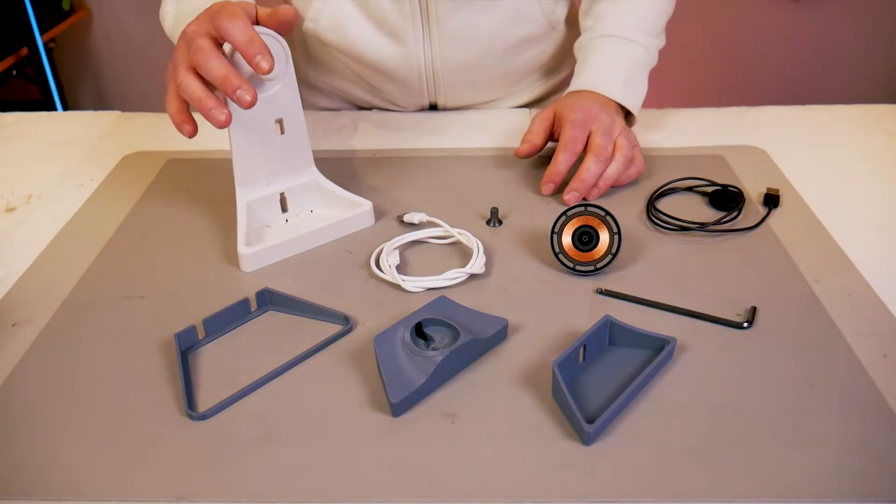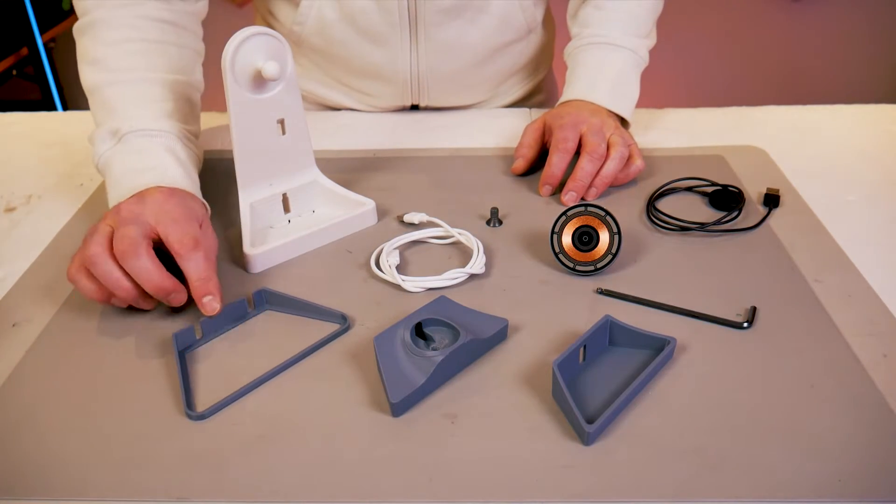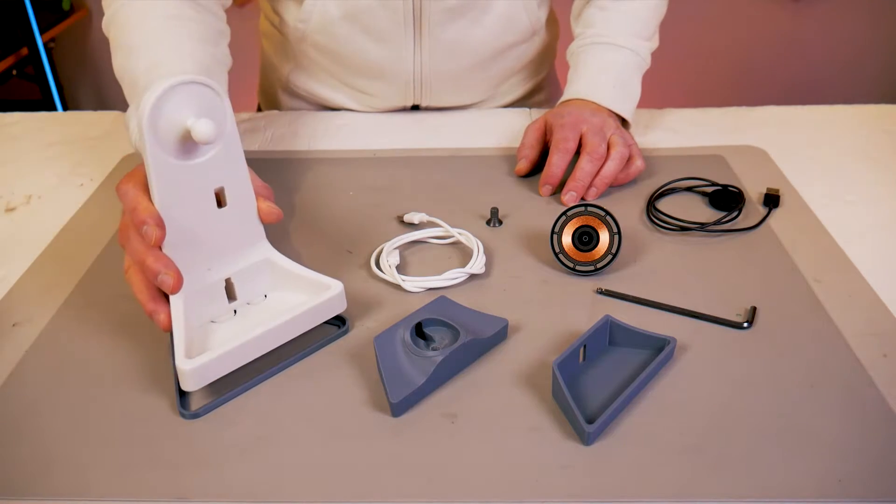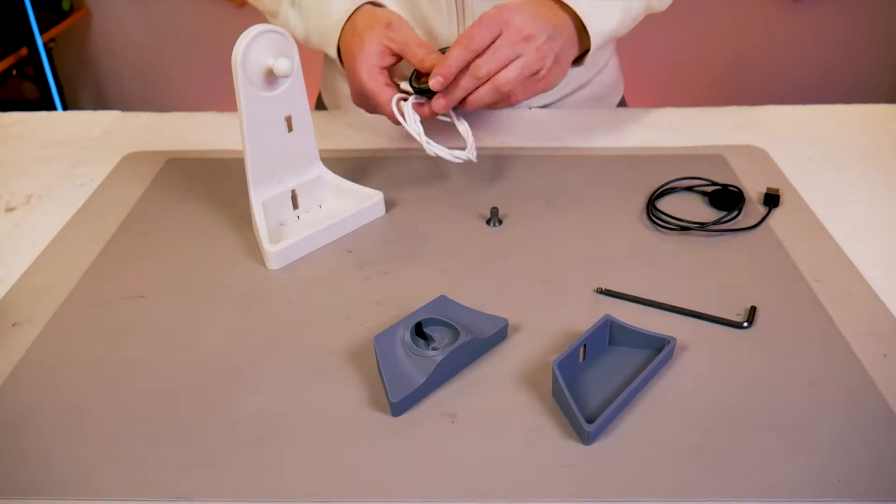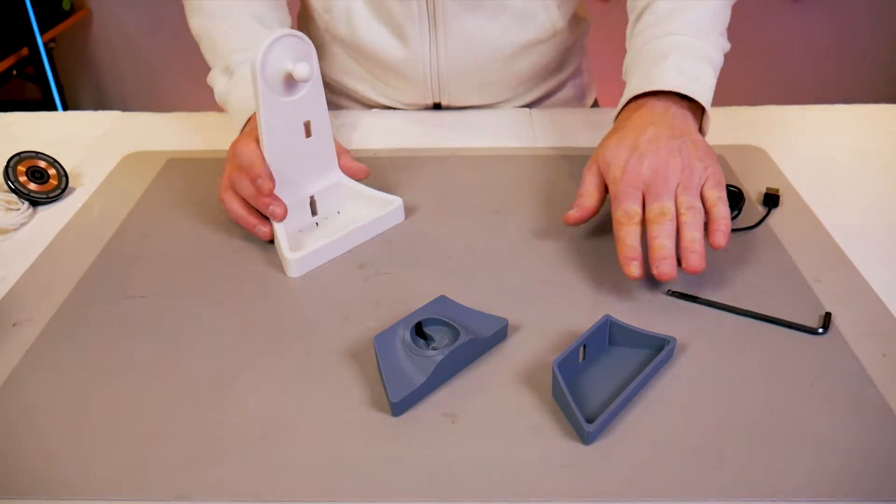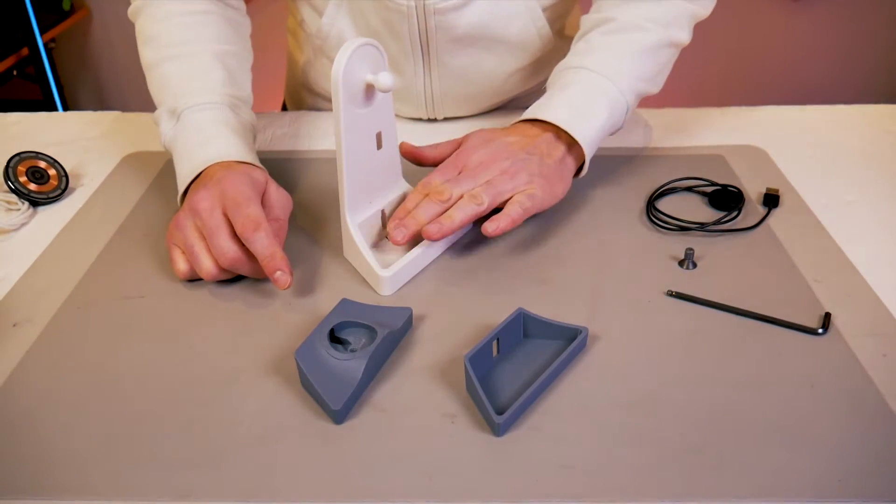I've laid out all the parts here so you can see them including some optional ones. First we have the bottom trim that the main base will sit on top of. We'll put that aside for now. Then we have the wireless phone charger. I'll put a link to that in the video description down below so it's easy for you guys to find.